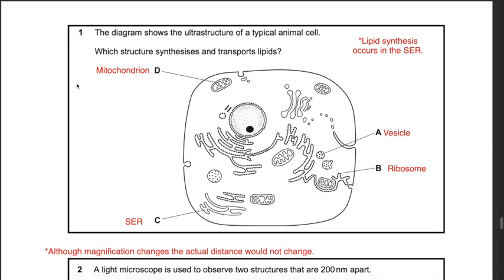Question 26: which structure synthesizes and transports lipids? Lipid synthesis is done in the smooth endoplasmic reticulum. Looking at answers A, B, C, and D, the best choice is C, as C represents the smooth endoplasmic reticulum. The other structures represent different organelles with different functions. The answer is C.